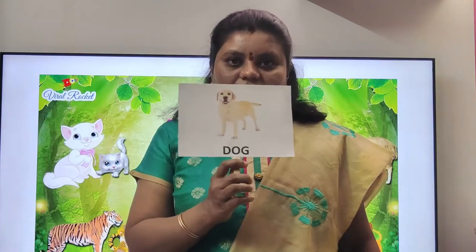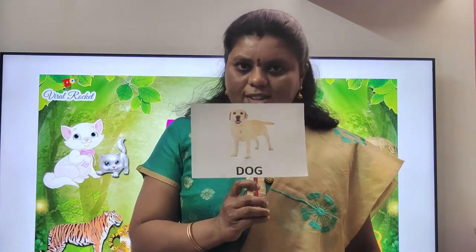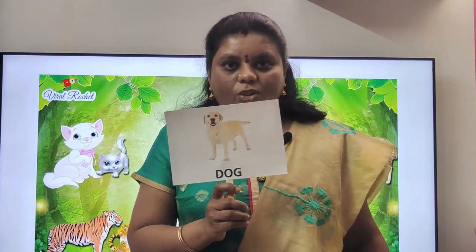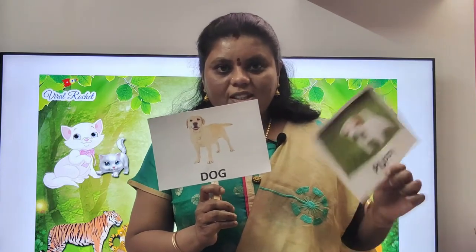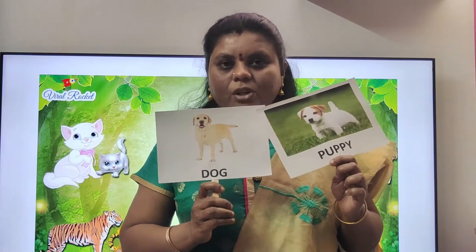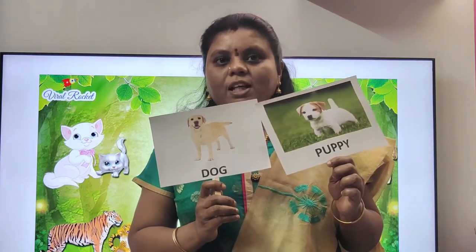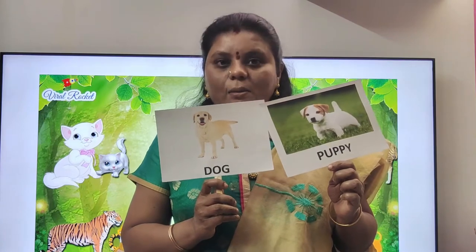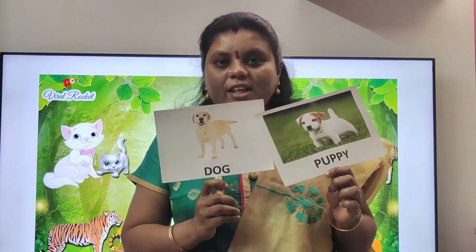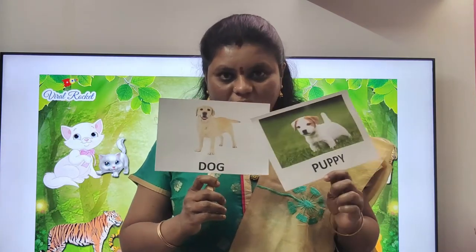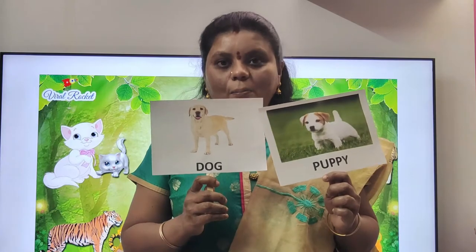What is this? Dog. Now the baby dog has come here. See the baby dog has come. What is the baby dog's name? Puppy! The baby dog is called a puppy. The young one of dog is called puppy.